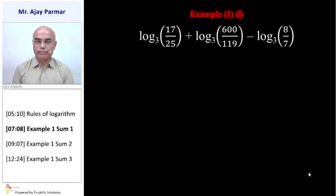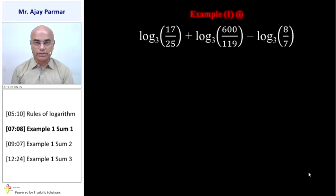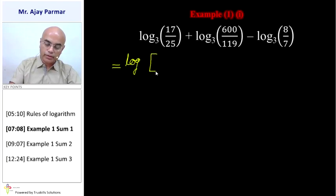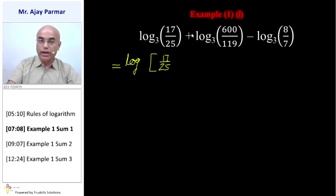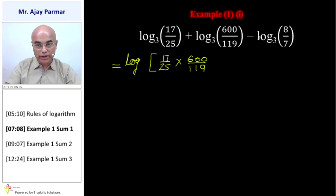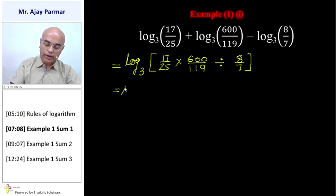Example 1, sum 1: We are given log 17 upon 25 to the base 3, and all three terms have the same base. Applying the product rule and quotient rule: the plus sign between terms means multiplication between numbers, so we write log of 17 upon 25 multiplied by 600 upon 119. The minus sign means division, so divided by 8 upon 7, all to the base 3.